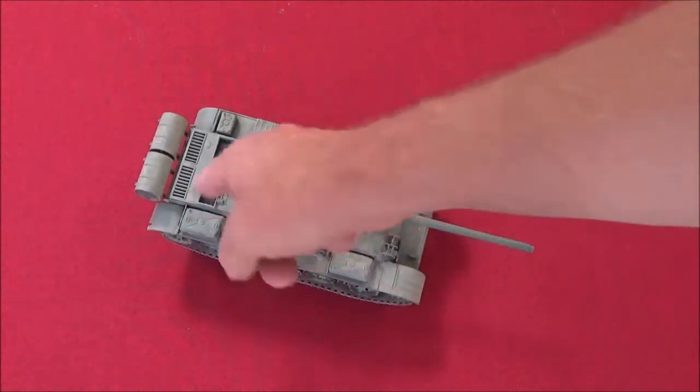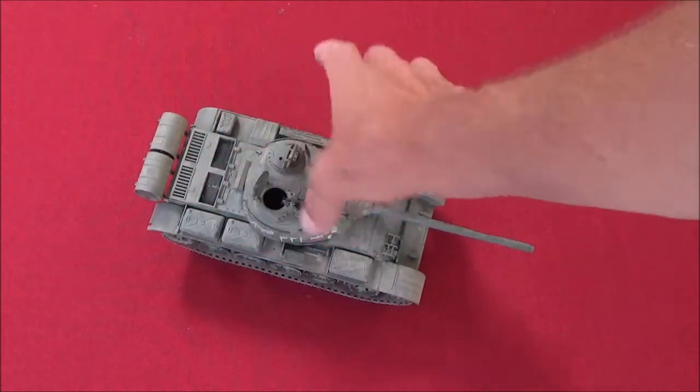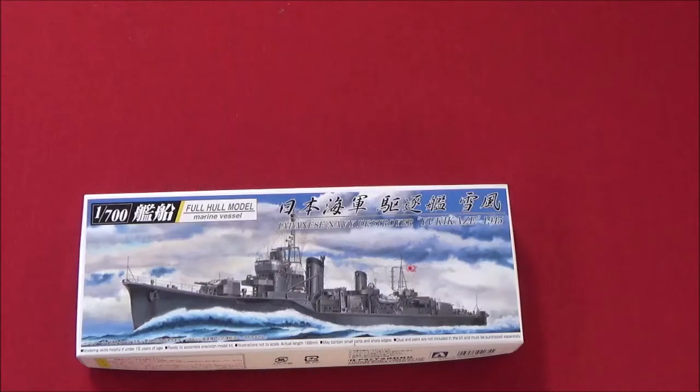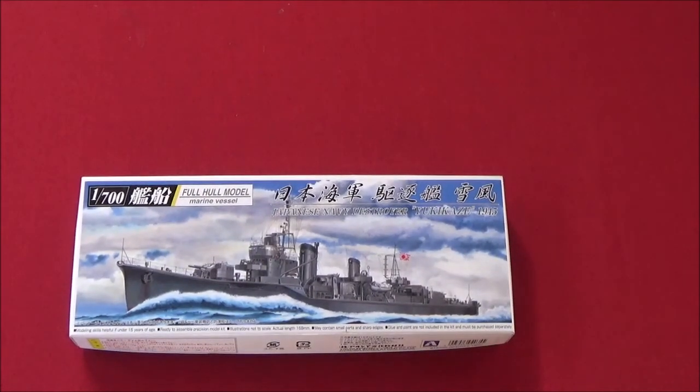So it does turn out pretty good. The meshing is a little bit, I don't know, it didn't hold very well. So thanks for watching, please like and subscribe. And next time I'll be taking a look at this IJN Yukikaze from 1945 in 1:700 scale from Aoshima. So until then, bye.